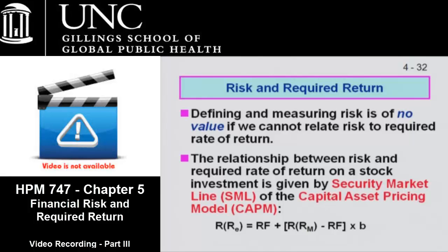What this model is, is a relationship between the amount of risk and the amount of return. Remember when I asked you the trick question: how do you decide between the clinic and the MRI? I said we can't, because you don't know if the increase in risk is worth the increase in return. This model allows you to make that decision because it takes into account both risk and return. The basic structure of the model is at the bottom of the slide: the required rate of return on equity of an organization equals the risk-free rate, typically measured by the treasury bond rate, plus the difference between the required rate of return on the market minus the risk-free rate, times its beta.